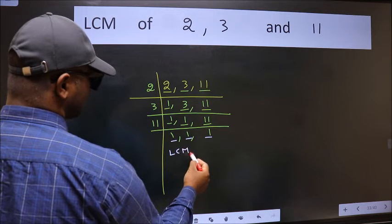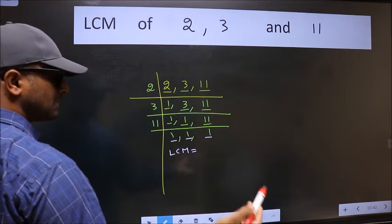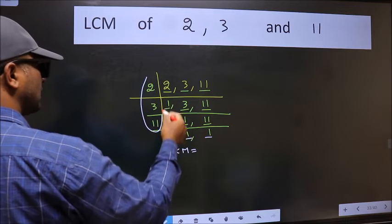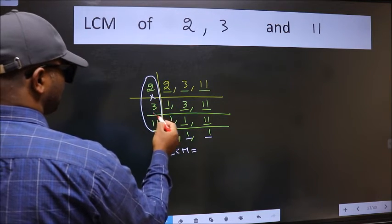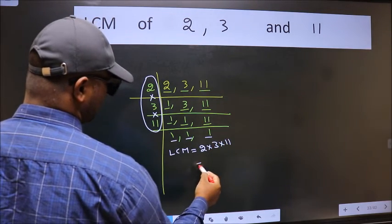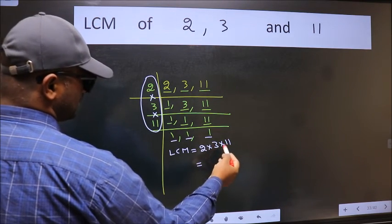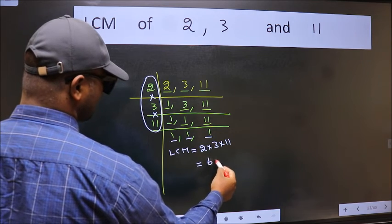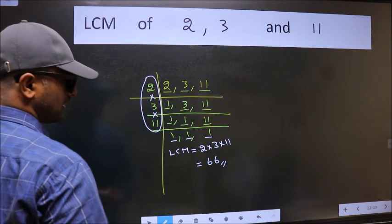So our LCM is the product of these numbers, that is 2 into 3 into 11. When we multiply these numbers we get 66 is our LCM.